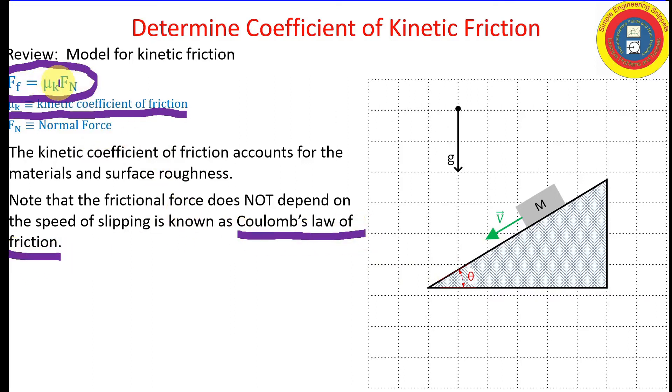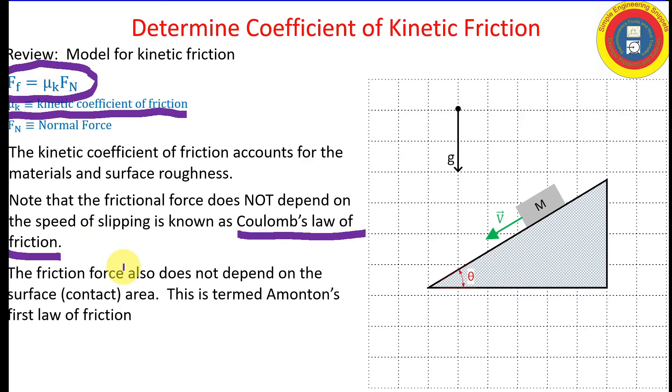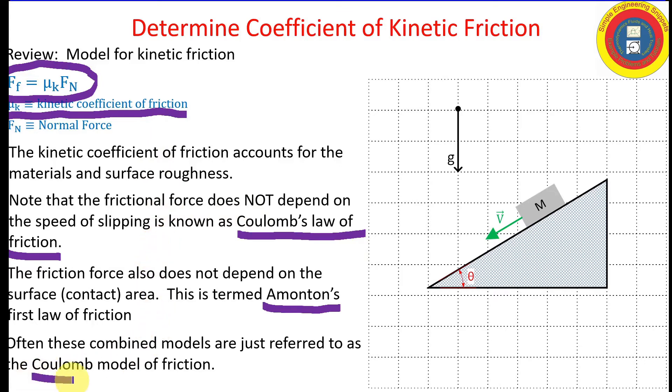You'll also note that the contact or surface area between the two surfaces does not appear, and this is attributed to Amontons. And typically, this model, and it is just a model, is normally attributed to Coulomb. So you'll normally just hear this model referred to as Coulomb's Model of Friction.